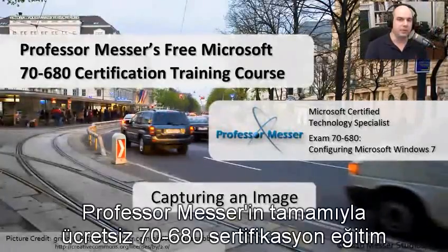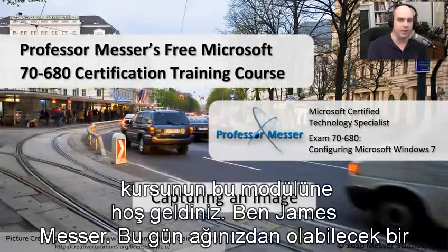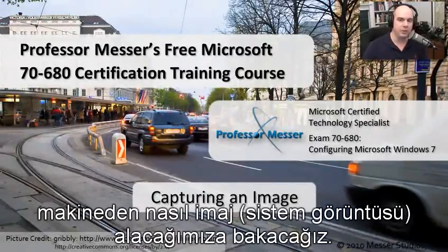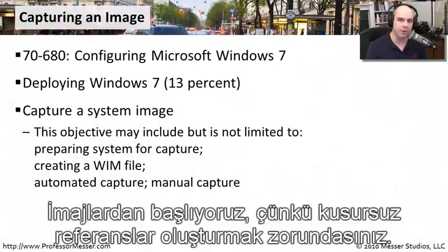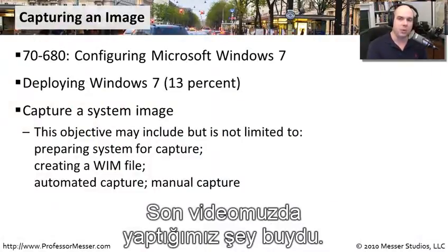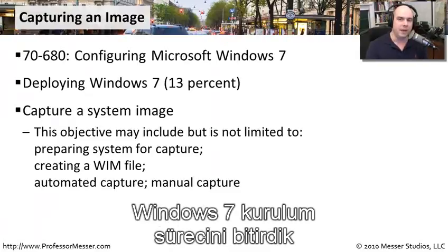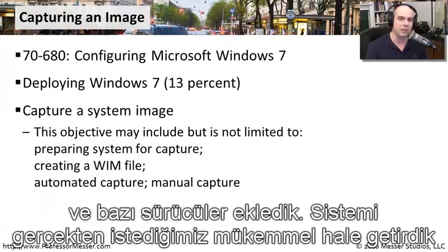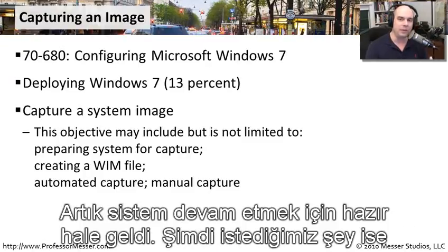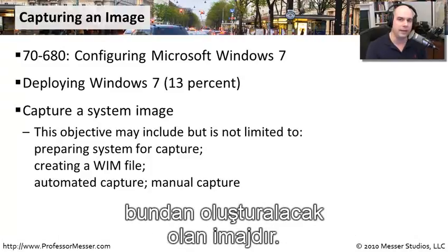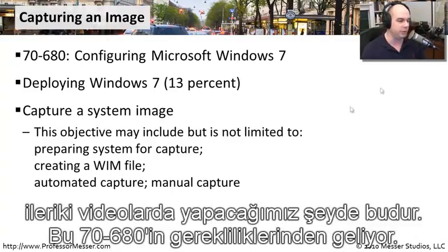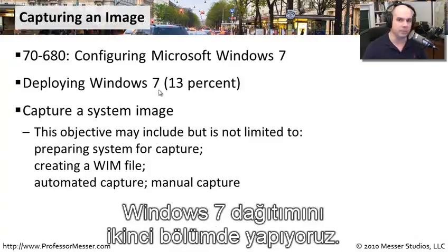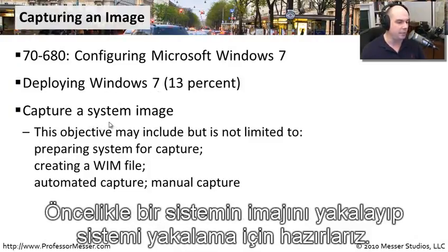Welcome to this module of Professor Messer's free Microsoft 7680 certification training course. I'm James Messer and in this module we're going to look at how you can capture an image from a machine that might be on your network. We created a perfect reference system in our last video, went through automating the installation of Windows 7, added drivers, ran sysprep, and now we'd like to image that. This comes from our requirements of 7680 where we are deploying Windows 7 - we're going to capture a system image.